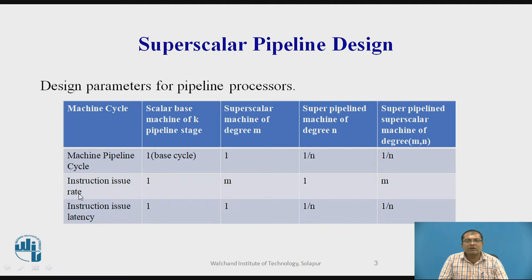The next parameter is instruction issue rate. For the scalar machine it is 1, indicating it issues one instruction per clock cycle. For the superscalar machine of degree M, it is M. For superpipeline it is 1, and for superpipeline superscalar it is also M.